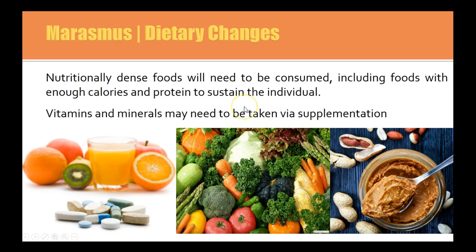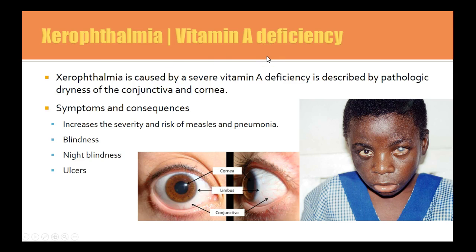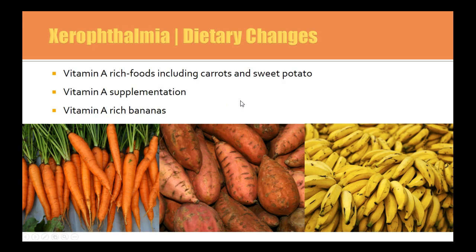Long-term solutions involve helping communities grow and incorporate their own crops. Xerophthalmia is vitamin A deficiency. Obviously including foods rich in vitamin A like carrots and sweet potato helps. In East Africa, through the Bill and Melinda Gates Foundation, scientists have genetically modified bananas to be high in vitamin A and given them to communities to grow. Since banana is a staple, it's now rich in vitamin A and helps stop vitamin A deficiency in those communities.